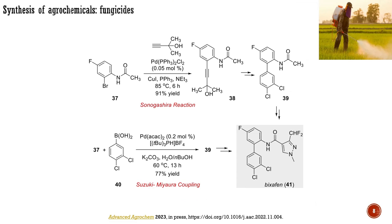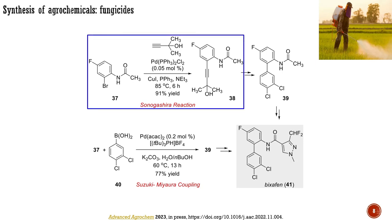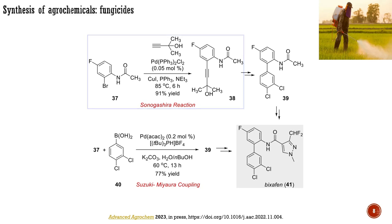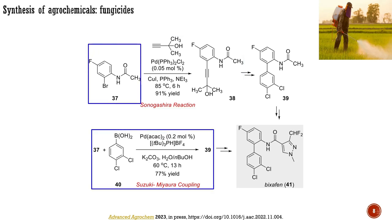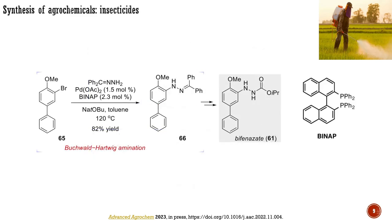The synthesis of a wide range of agrochemicals includes at least one step based on cross-couplings. For instance, bixafen is a fungicide developed by Bayer and is used for the treatment and prevention of various leaf diseases. It is produced by a sequence of transformations starting with the palladium-catalyzed Sonogashira coupling presented here. The alkynylation is followed by a [4+2] cycloaddition reaction to construct the second phenyl ring of the key intermediate. Another elegant route is based on the Suzuki coupling between dichlorophenylboronic acid and a derivative of 2-bromoacetanilide, enabled by the tri-tert-butylphosphine ligand. Bifenazate is an insecticide used for mite control; its synthesis is based on the Buchwald-Hartwig amination including derivatives of biaryl bromide and hydrazine, with the carbon–nitrogen bond formation enabled by BINAP combined with palladium acetate.